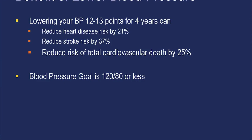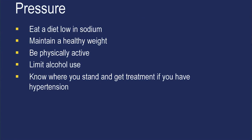Lowering blood pressure can also reduce total cardiovascular death by 25 percent. Most people have a blood pressure goal of less than 120 over 80. Knowing your numbers and screening for high blood pressure can help prevent cardiovascular disease. To reduce blood pressure, eat a diet low in sodium, maintain a healthy weight, be physically active, limit alcohol use, and get treatment if you have hypertension.